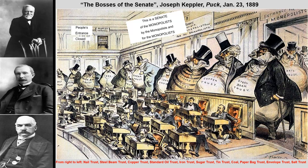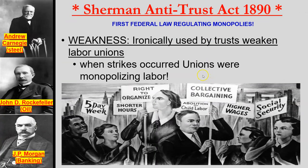A famous cartoon called 'The Bosses of the Senate' from 1889 portrays how these big trusts are literally in the back pockets of senators at the state and federal level. The senators are shown looking back at these trusts — portrayed as gigantic money bags — with a direct route into the Senate floor while the people's entrance is closed. They don't hear the people's voice; they hear the voice of the trusts and the money that influences their votes.